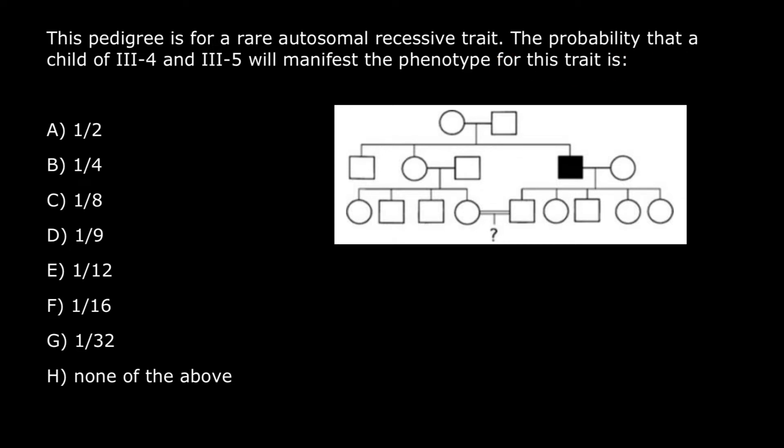Looking at this pedigree, we can say that the person here who is affected has genotype small a, small a, because this is an autosomal recessive trait. So this has to be his genotype.